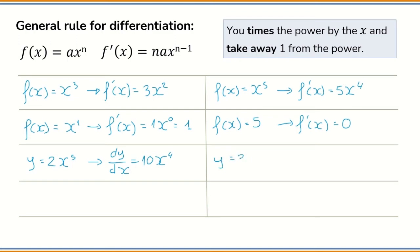y equals 3x to the power of minus 2. This time we have a negative power. The derivative of y with respect to x equals minus 2 times 3, which is minus 6, x to the power of minus 2 minus 1, which is minus 3.